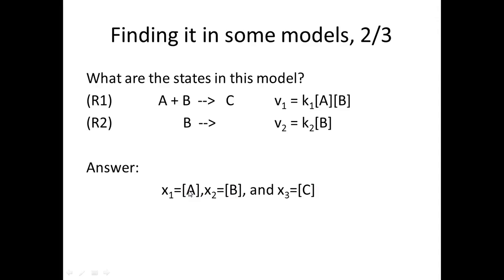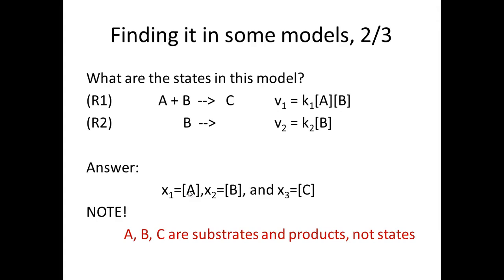There is an important distinction: in the reaction you write that A together with B becomes C, referring to the substances. That is not the same as the concentration or amount of these substances. If we are strict, the state is the concentration or amount — the thing that changes over time — not the substance name itself as it appears in the reaction notation.